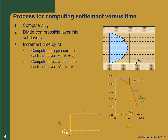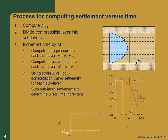First, we compute the pore pressure for each sublayer using the static pore pressure plus the current excess pore pressure determined from our isochrone. We then compute the vertical effective stress for each layer using our effective stress equation. And with the effective stress known, we can compute the strain in each sublayer using our strain vs. effective stress relationship. With the strain, we can compute the settlement for each sublayer. Once we've done these computations for all the sublayers, we can add up the settlement of each sublayer and determine the total consolidation settlement at the current time, and plot that point on our graph of settlement vs. time. We'll then go back to step 3, increment time, and repeat the whole process.